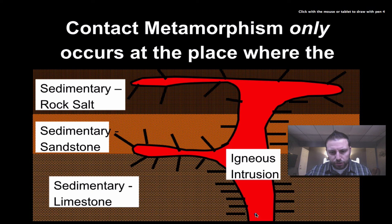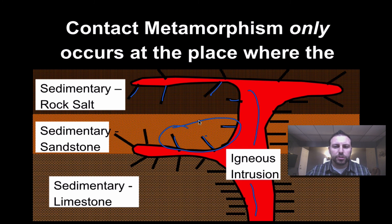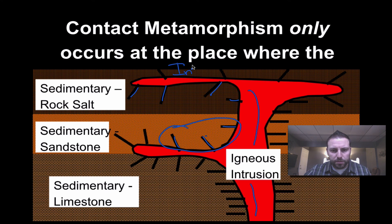As this intrusion comes up, it changes the rock it's in contact with. Contact metamorphism is shown on diagrams by little spikes or hairs coming off the intrusion. Contact metamorphism only occurs at the place where the intrusion contacts the local rock.